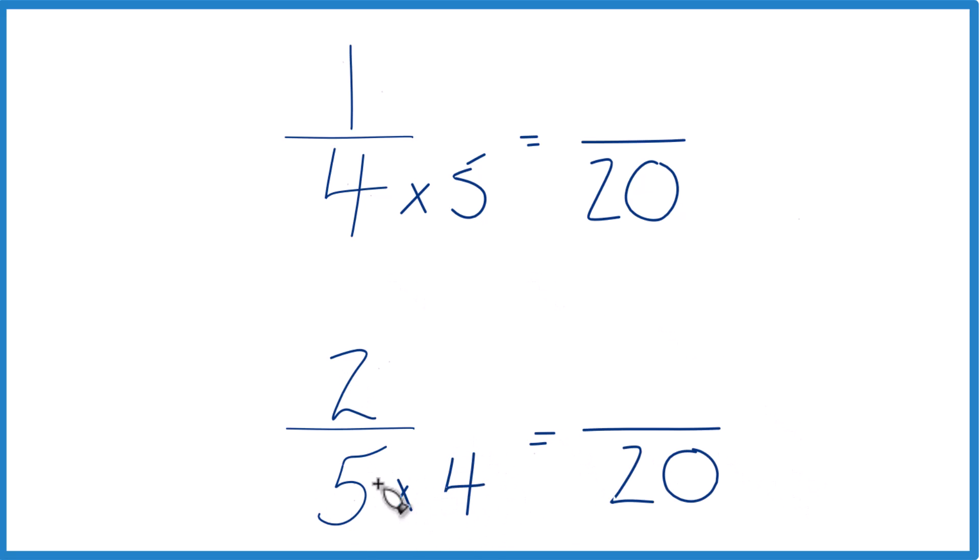But I can't just multiply the denominator by 4, I need to multiply the numerator as well. That's because 4 over 4 is just 1, so I don't really change the value, I just change the way it's written. 2 times 4, that's 8. Up here, multiply the numerator times 5, 1 times 5, that's 5.